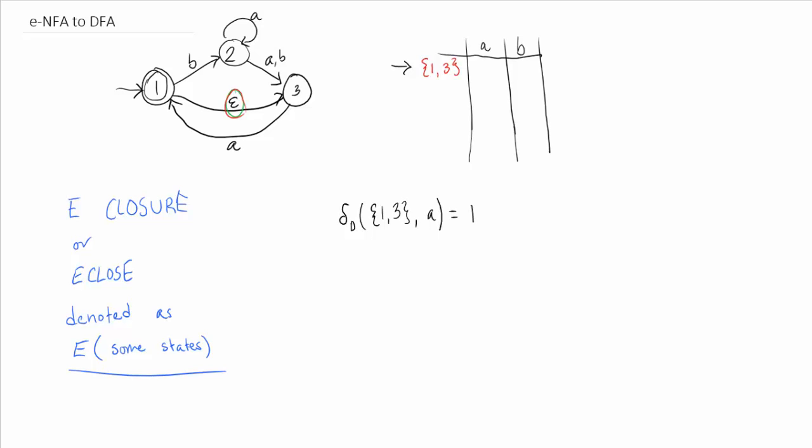So now we want to take the e-closure of the union of all states in this set. So we have another delta here, because this represents the transition in the ENFA, which is why we have delta E here. We have delta D here, because this is the state function that we're looking at for the DFA. All right, so let's finish this up.